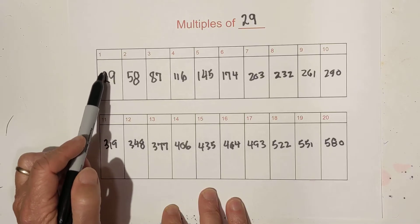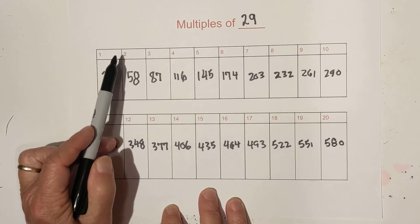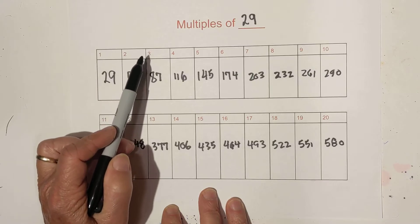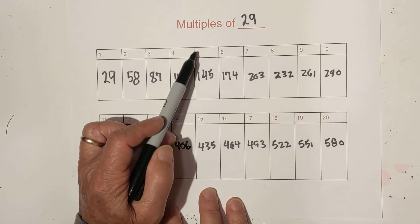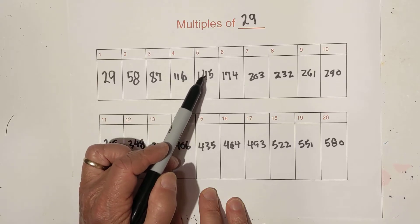1 times 29 is 29, 2 times 29 is 58, 3 times 29 is 87, 4 times 29 is 116, and 5 times 29 is 145.